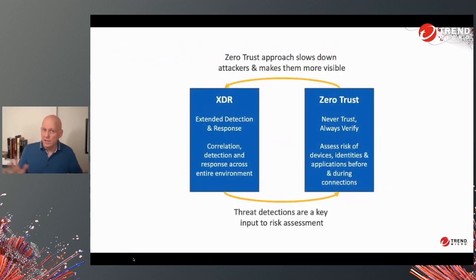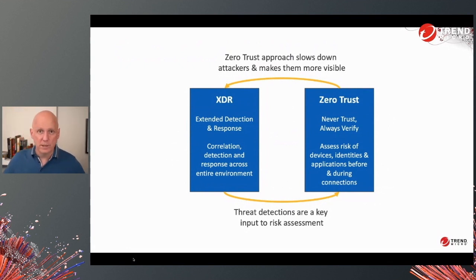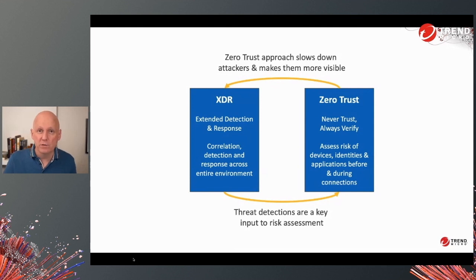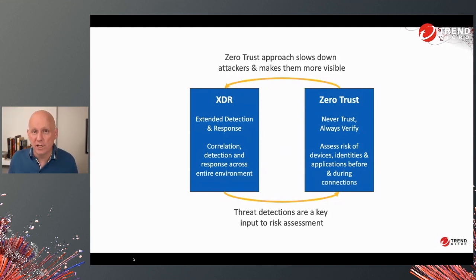Netting out my story: these two concepts that are certainly being talked about a lot are interrelated and really powerful when combined — XDR to do a much more effective job of detecting threats across the organization, and Zero Trust to help slow down those attackers and make them more visible to detection. All of this gives you a better chance against threats like ransomware. Thanks very much, and enjoy the rest of Black Hat.